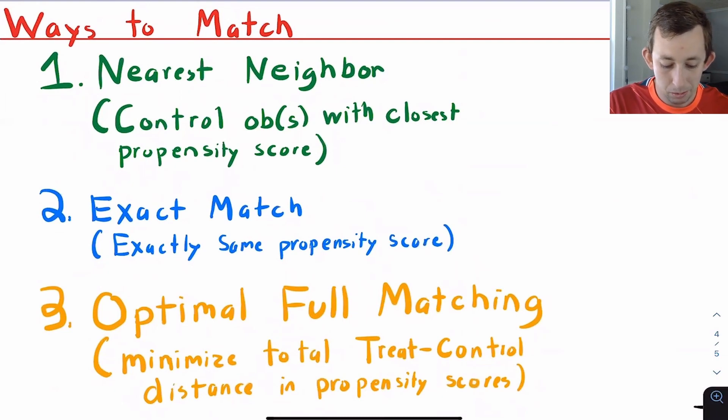You can do nearest neighbor, which I think makes the most sense, where you say, well, Bill has a propensity score of 60%. Who is the closest person in the control group to Bill? You use that person as a counterfactual. So in our example, that was Esther.